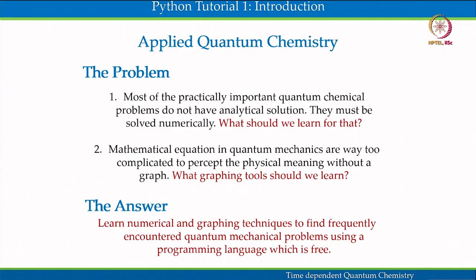Welcome to Python Tutorial One of the course 'Time Dependent Quantum Chemistry.' The subject quantum chemistry is very often taught at both the undergraduate and graduate levels with almost entire focus on systems having known analytical solutions. Particle in a one-dimensional box, simple harmonic oscillator, and hydrogen atom are very popular examples. On the other hand, most practical problems in quantum chemistry and quantum mechanics, even at a preliminary research level, do not have any analytical solutions. They must be solved numerically.